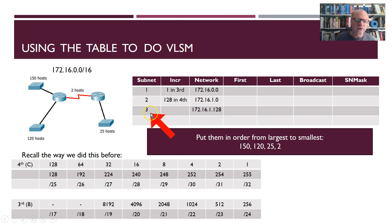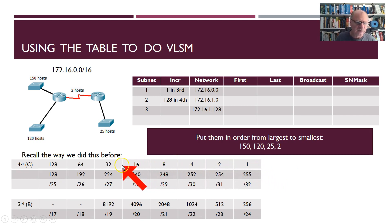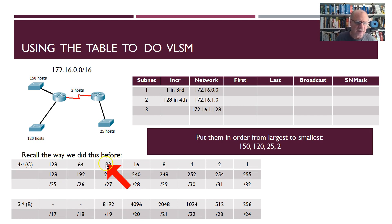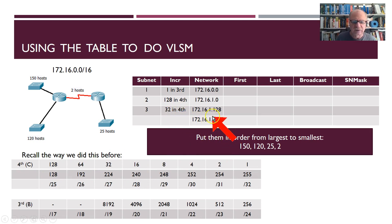For our third subnet we need 25 hosts. Looking across until we can get 25 — right here. Now I'm working in this column, so I'm going to increment by 32 in the 4th octet. 128 plus 32 in the 4th octet gives us 160. So the third network address is 172.16.1.160.